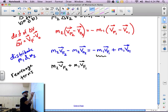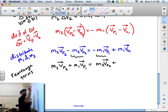and that's going to equal, so this one I'm going to move to the other side as well, because it's negative. M2 v initial object 2, plus m1 v initial object 1.